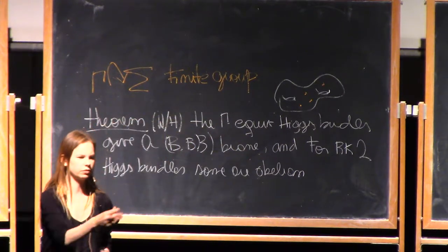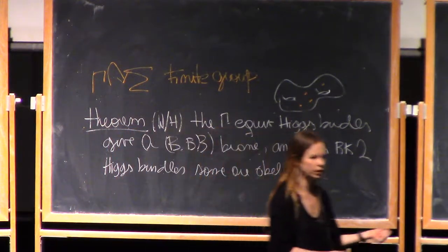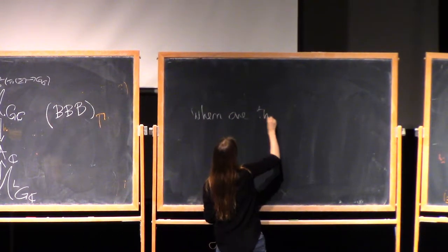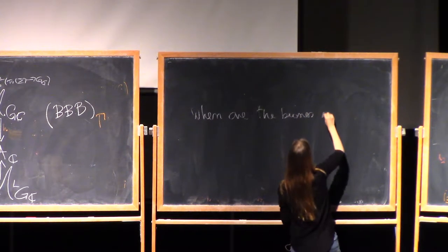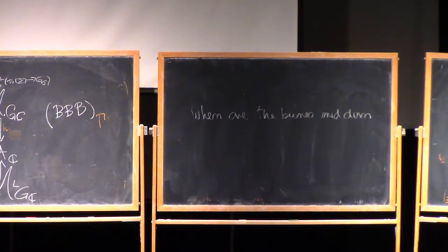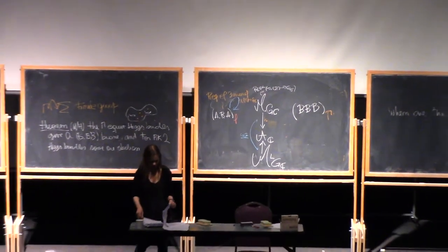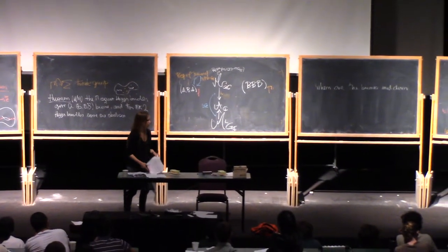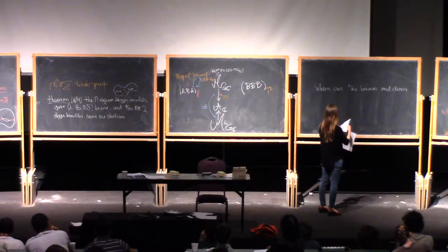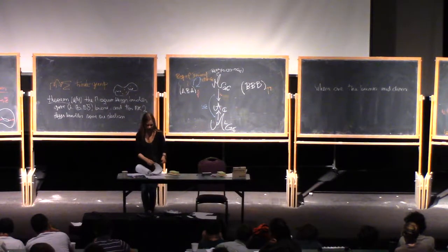There's a further question we want to ask: when are these BBB branes mid-dimensional? When are these BBB branes particularly interesting? In particular, because in those cases we can have Lagrangian fibers. I want to mention the two cases where they can be mid-dimensional. For more details on that brane, you'll have to look at the last pages of these notes.